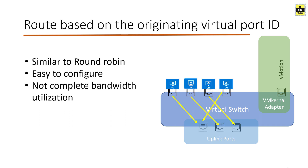The downside of route based on originating virtual port ID is that if the first and last virtual machines connected to VMNIC 1 have higher utilization while the VMs on VMNIC 2 and 3 are less utilized, bandwidth distribution is uneven. So while this is not ideal for bandwidth utilization, it is very easy and quick to configure.